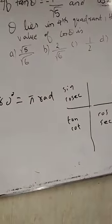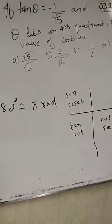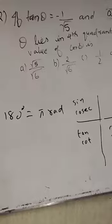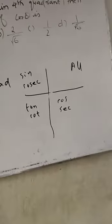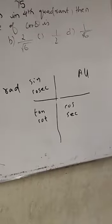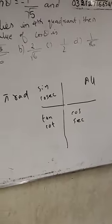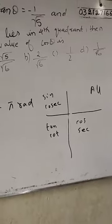...tan θ is negative, and θ lies in the 4th quadrant — of course, tan is negative in the 4th quadrant. So what is the value of cos θ?